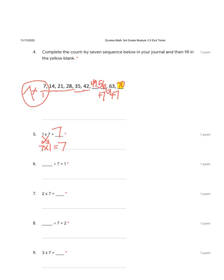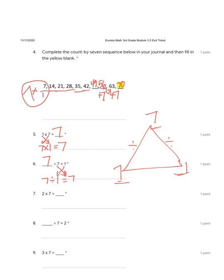The commutative property tells us that we can switch these numbers: one times seven, and the answer would still be seven. We can also take this multiplication sentence and change it into division. When we're dividing, the biggest number always comes first. The biggest number here is seven. Seven divided by seven equals one. To complete this fact family, we can switch the two numbers: seven divided by one also equals seven.